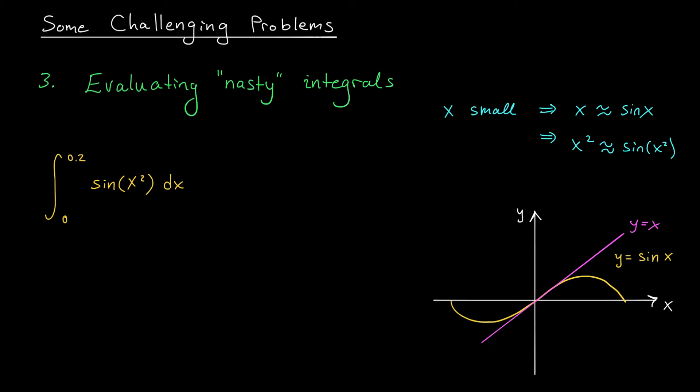Oh, well this is awesome, because we're integrating pretty small values of x. So I should be able to replace the function sine of x squared with the function x squared and get an approximation for my integral. This thing is approximately the integral from 0 to 0.2 of x squared dx. Oh, but would you look at this? This is an integral that we can evaluate.